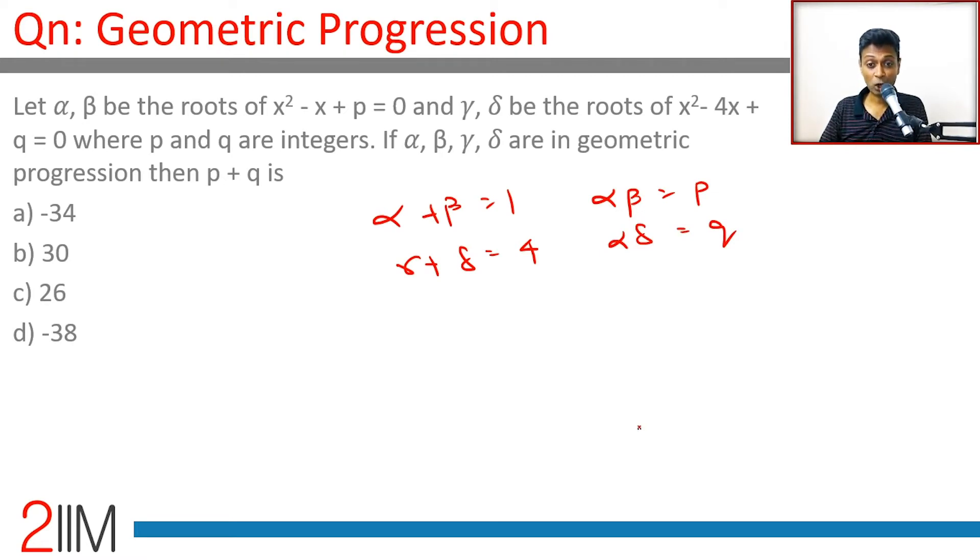Alpha, beta, gamma, delta are in geometric progression. Brilliant. Alpha plus beta is 1. Think about it.